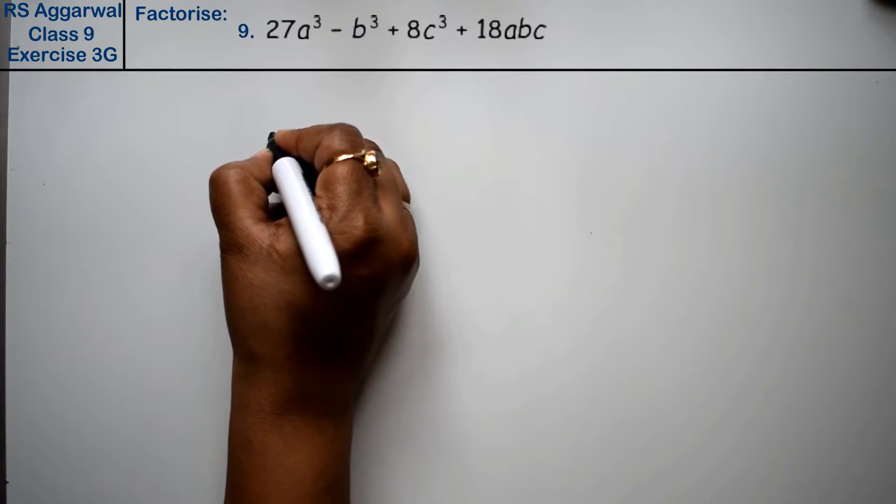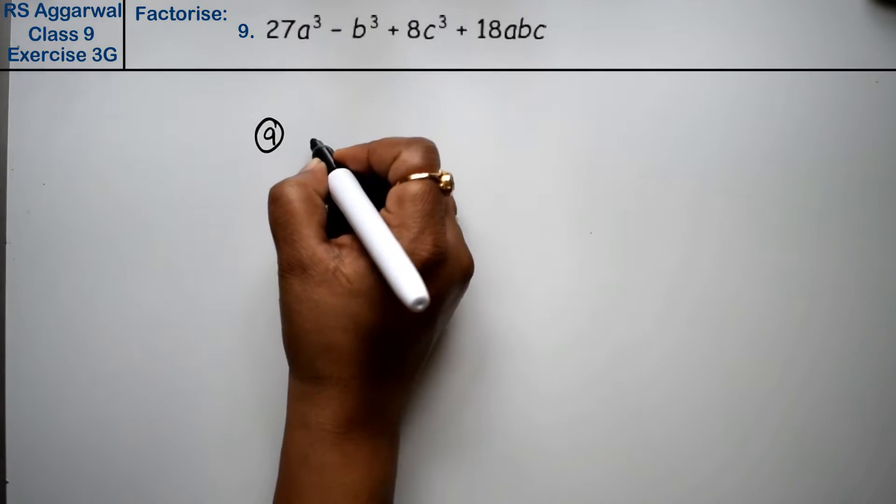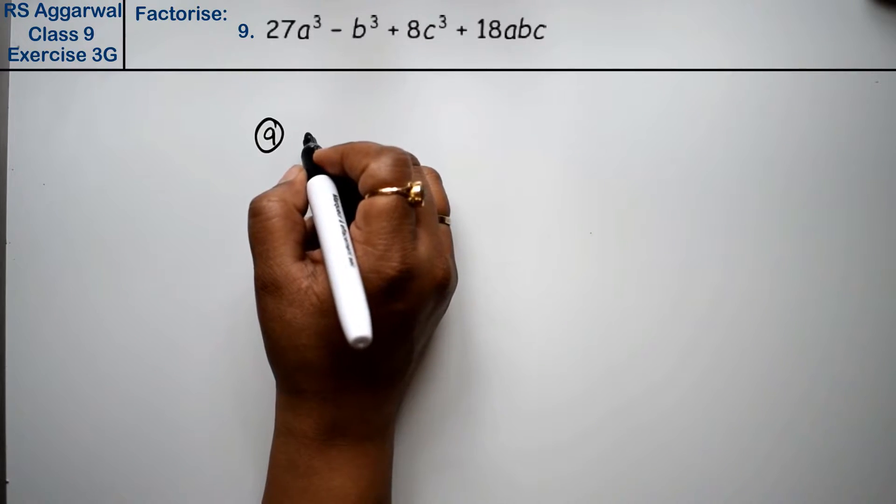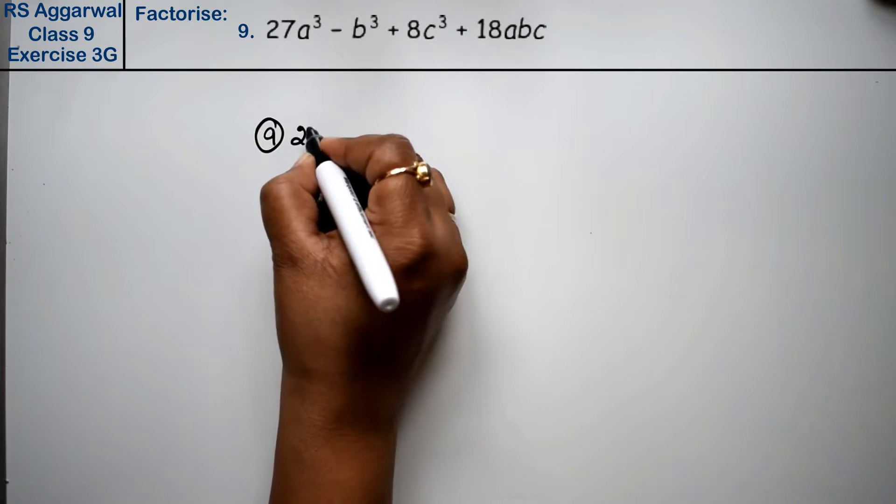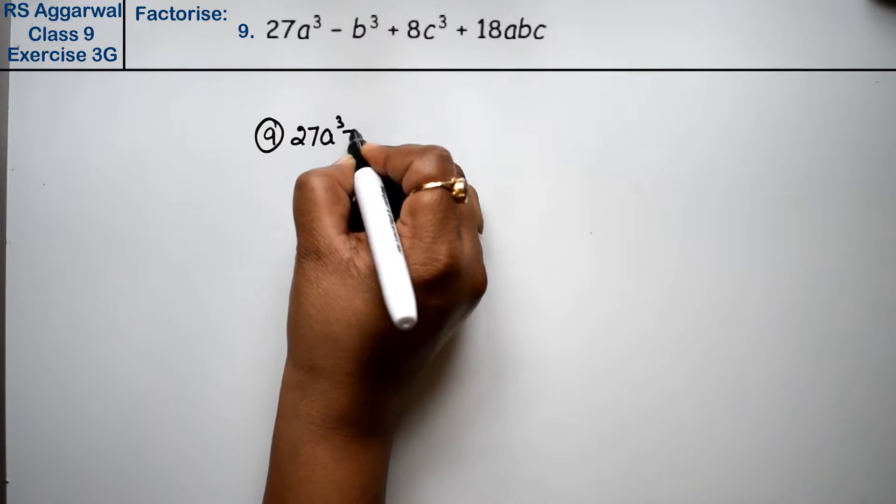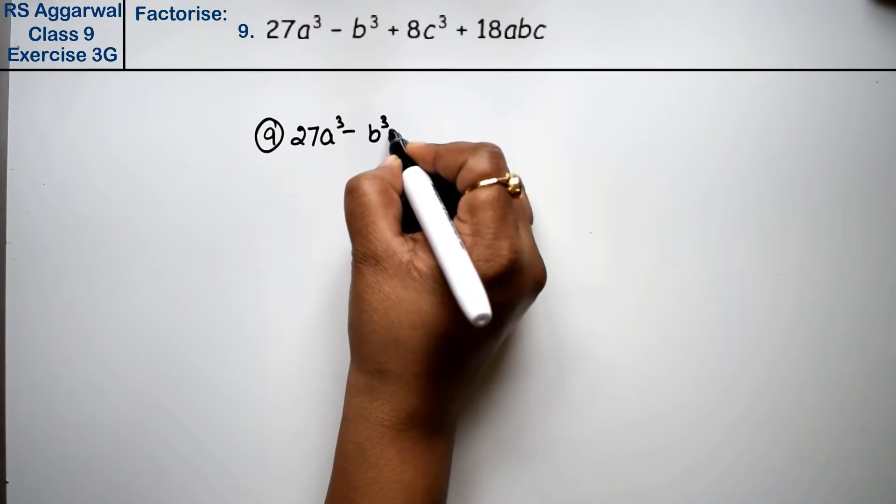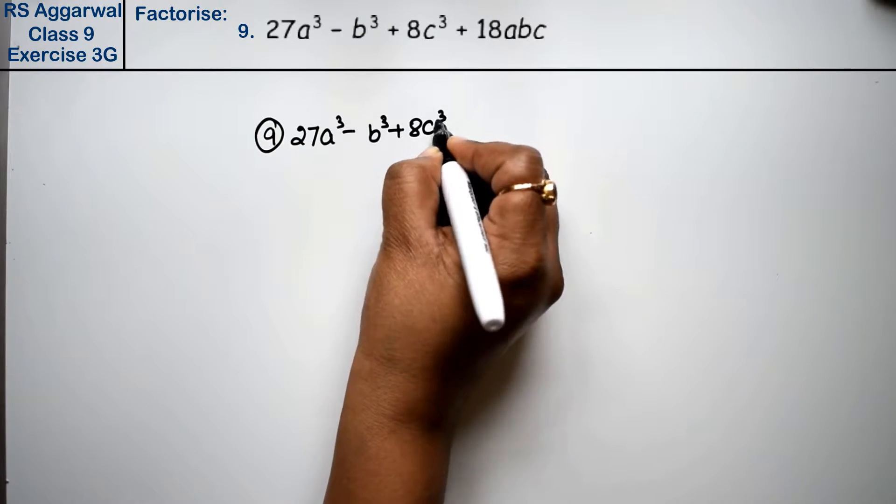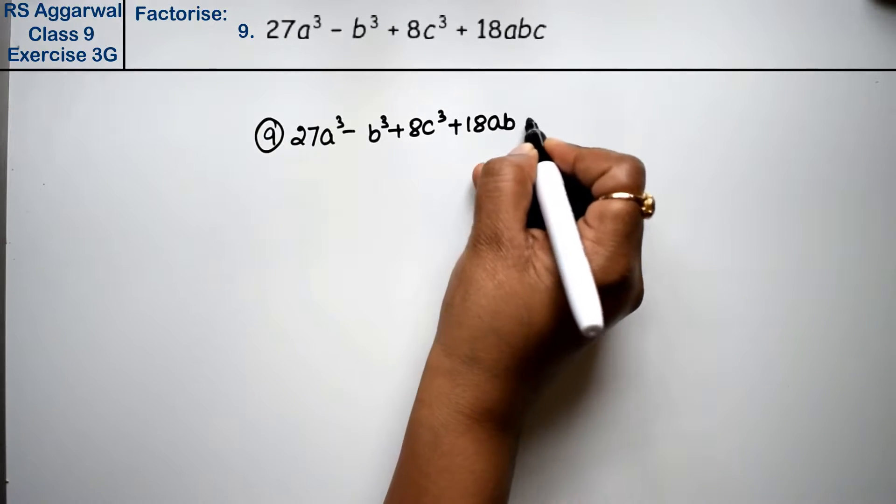Let's do question number 9 of exercise 3G, that is factorization of polynomial. Question number 9 is 27a³ - b³ + 8c³ + 18abc.